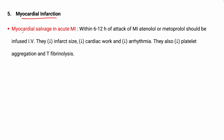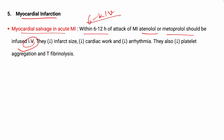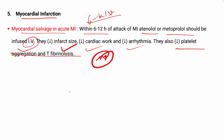Next cardiac use is myocardial infarction. For salvage in acute MI, within 6 to 12 hours of the acute attack, atenolol or metoprolol should be infused intravenously. This reduces infarction size, cardiac work, and arrhythmias. It also reduces platelet aggregation and fibrinolysis, which is important in MI patients.